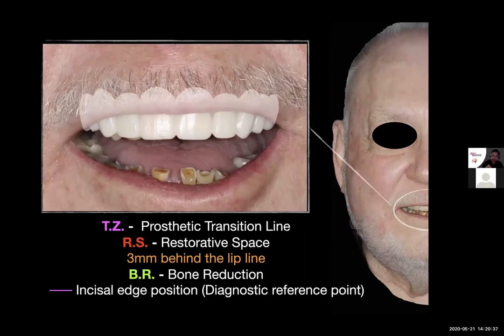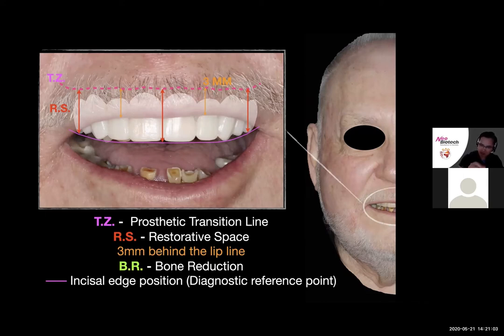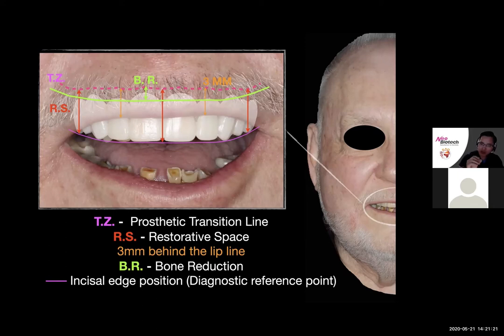The pink dash represents the prosthetic transition zone — we want it to be about three millimeters above the highest smile line. We measure the minimum restorative space starting from the diagnostic reference point, which is the new incisal edge in the anterior and posterior. Pretend the gingival collar line is the patient's existing bone crest. If the transition zone is more apical to the existing gum line by an extra amount, then after extraction you should plan to reduce the crest of bone by that extra amount. In the planning software, mark that amount of bone reduction and plan your implant position at that level of bone after reduction.